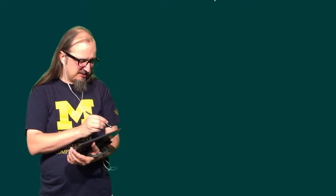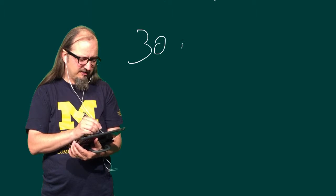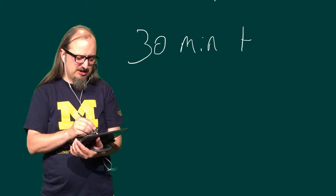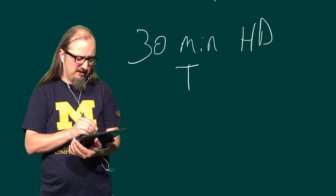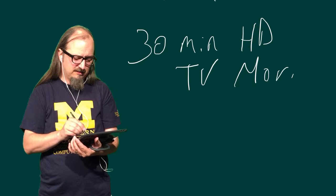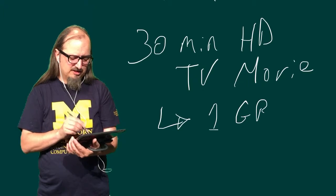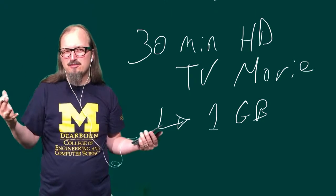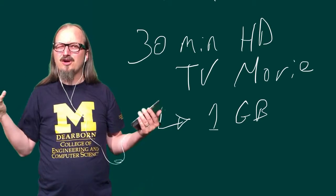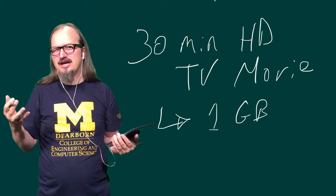But if we're talking about bigger files like pictures or music or videos, I want to jump right up to videos, because if we have say 30 minutes of HD TV or movie, that's about one gigabyte. So if you're downloading a two-hour movie, you're downloading four gigabytes of data. Kind of crazy, right?